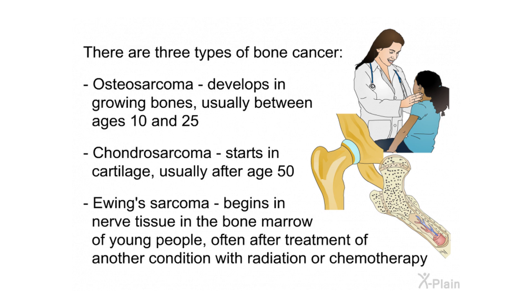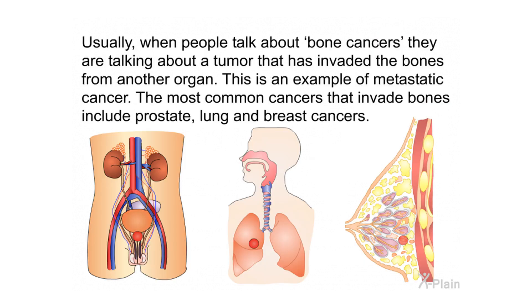Osteosarcoma develops in growing bones, usually between ages 10 and 25. Chondrosarcoma starts in cartilage, usually after age 50. Ewing sarcoma begins in nerve tissue in the bone marrow of young people, often after treatment of another condition with radiation or chemotherapy. Usually when people talk about bone cancers, they are referring to a tumor that has invaded the bones from another organ — this is an example of metastatic cancer. The most common cancers that invade bones include prostate, lung, and breast cancers.